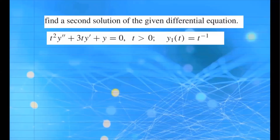We're going to find a second solution to this given differential equation. We're given one of the solutions, y1, which is equal to t to the negative 1. So now, how do we find the second independent solution? We're going to use the following technique — it's called the reduction of order method.